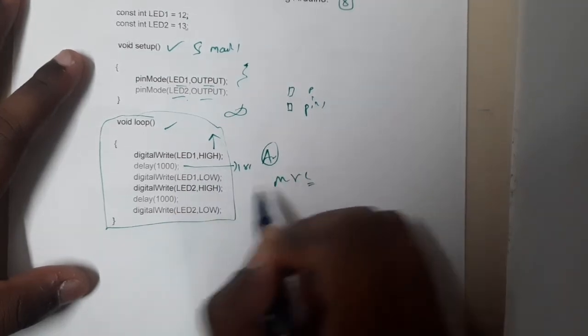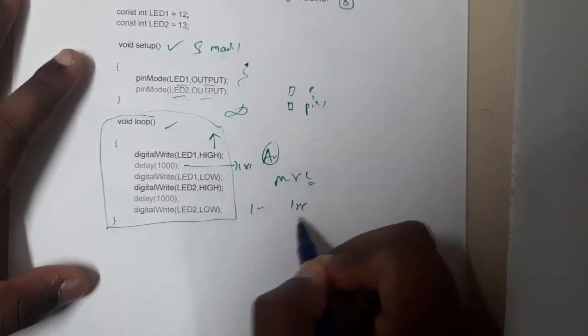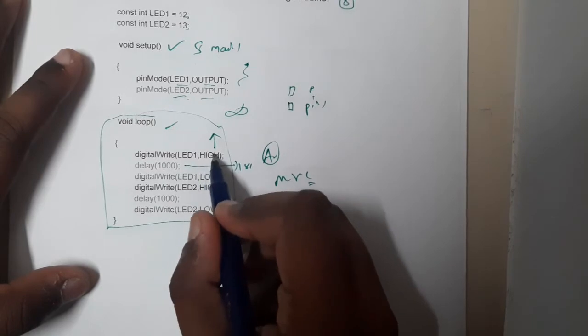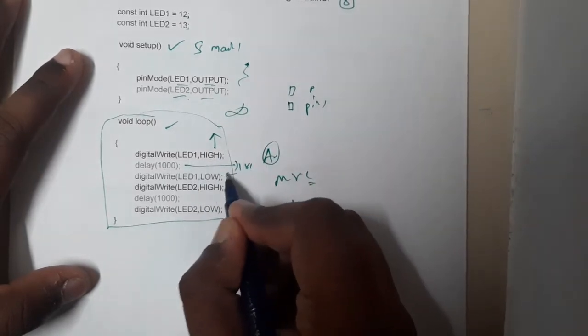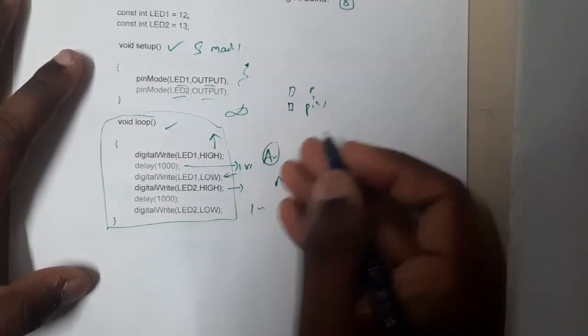Thousand milliseconds equals one second. So you kept it for one second, after that you made it low, again you made the second one high, and then you waited for one second and again made it low.